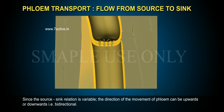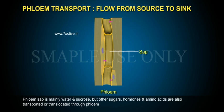Since the source-sink relation is variable, the direction of the movement of phloem can be upwards or downwards, that is bidirectional. Food in phloem sap can be transported in any required direction so long as there is a source of sugar and a sink able to store or remove the sugar. Phloem sap is mainly water and sucrose, but other sugars, hormones and amino acids are also transported or translocated through phloem.